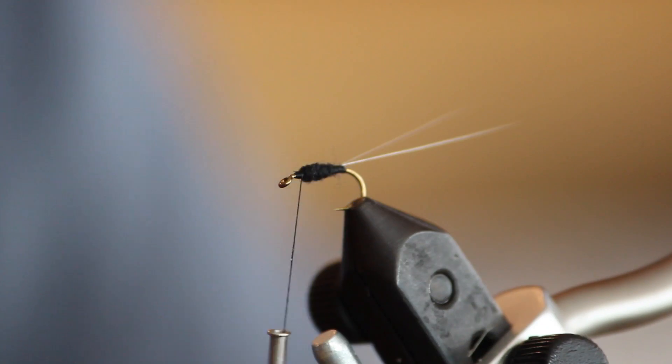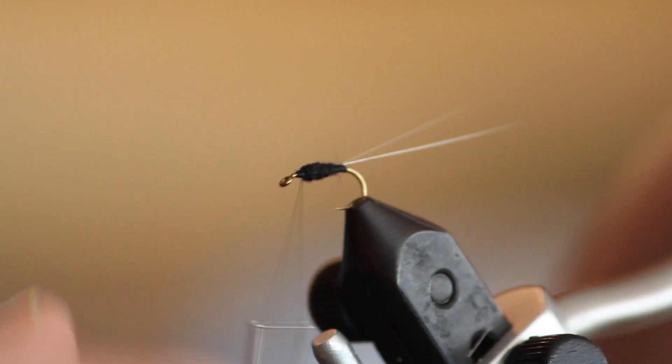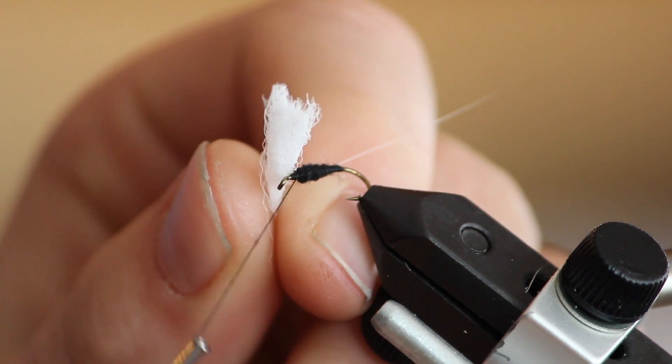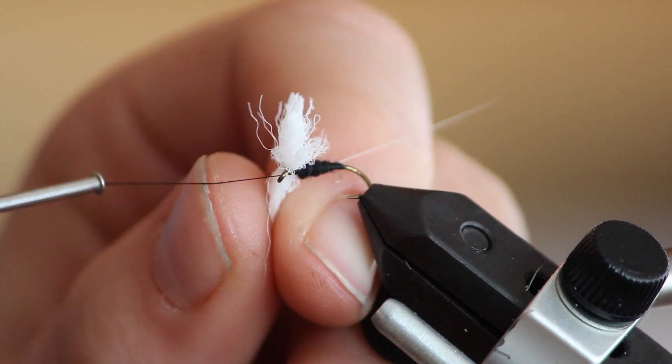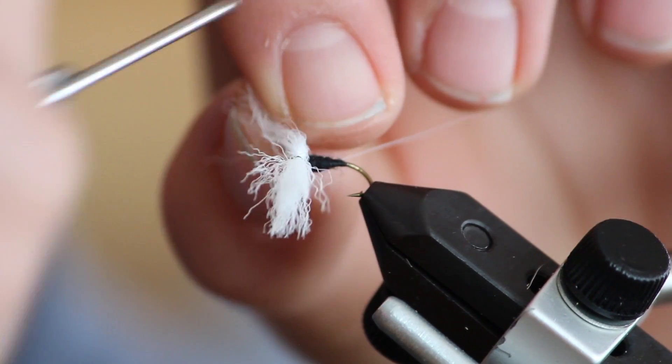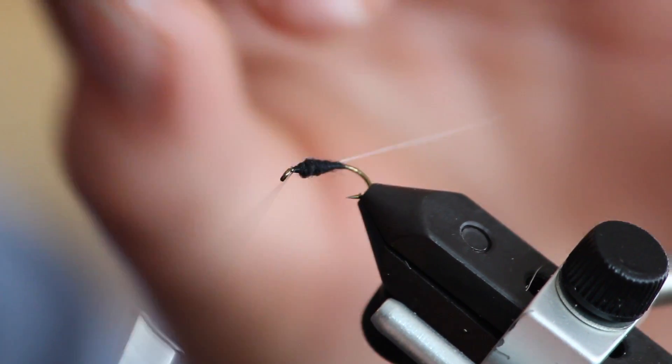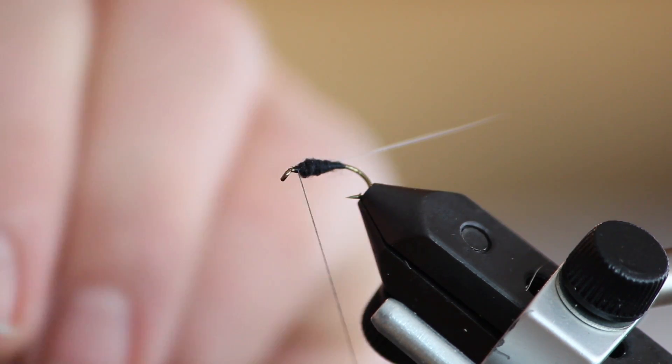For the spinner wings, we will use white poly yarn. Cut off about an inch. Make several tight X wraps to secure the poly yarn in place. The poly yarn might twist around the hook if you try to get it as tight as possible.